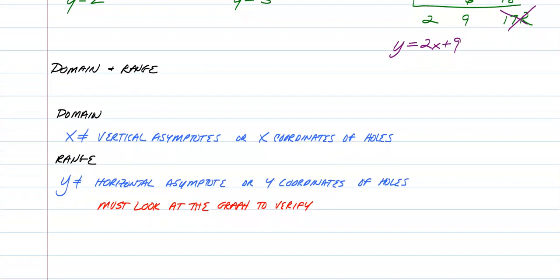When it comes to domain and range, the domain will follow the rule of x cannot equal any vertical asymptotes or x-coordinates of holes. The range, you sometimes follow the rules but not always. Remember, a horizontal asymptote can be crossed in the middle. So if the horizontal asymptote is not crossed, you typically follow the rules of y cannot equal any horizontal asymptote or y-coordinates of holes if they are odd. But you always have to check the graph to verify.